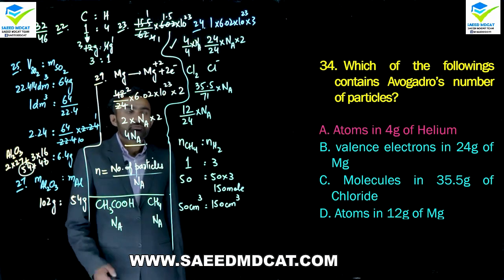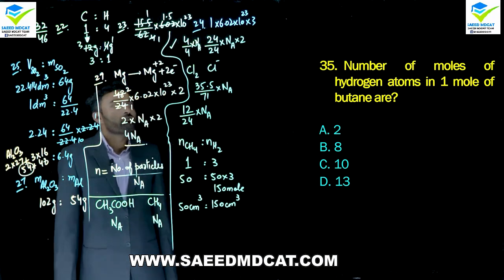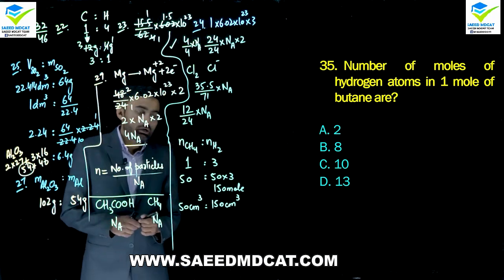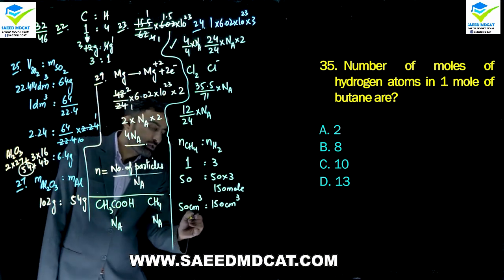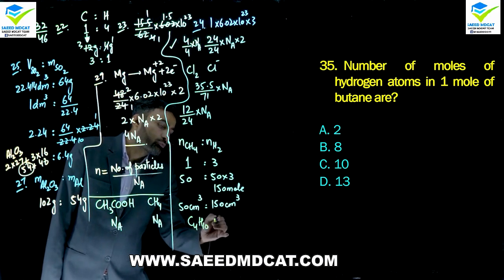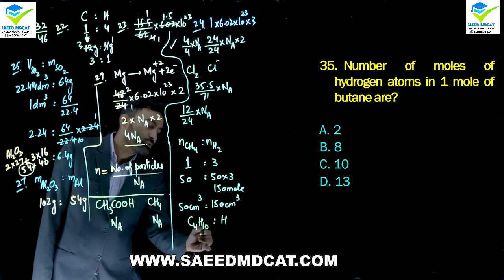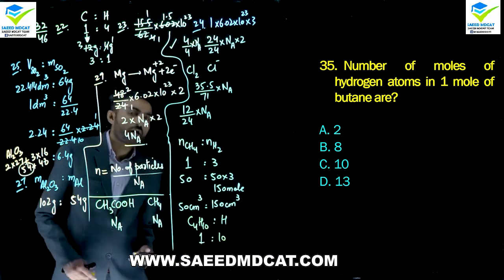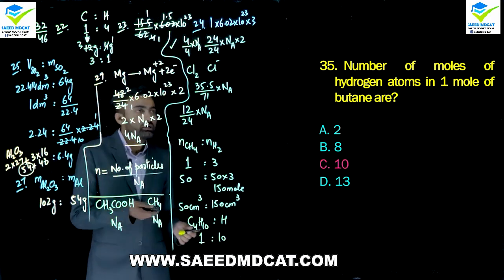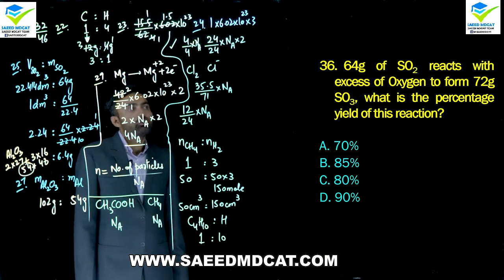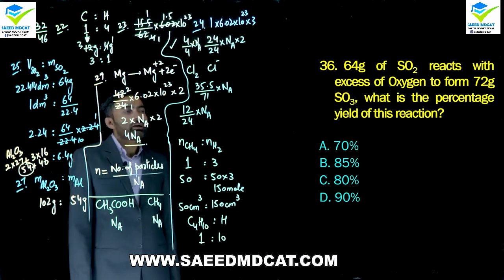Question 35: Number of moles of hydrogen atoms in one mole of butane (C4H10). Butane has 10 hydrogen atoms per molecule, so one mole of butane contains 10 moles of hydrogen atoms. Charlie option is correct.